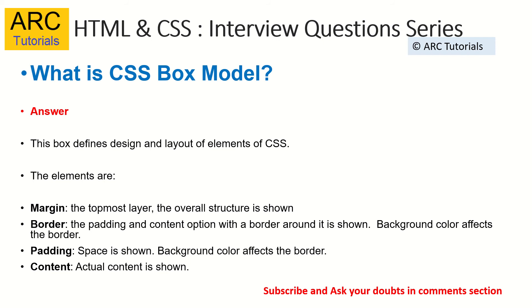The next question that follows is: what are the elements that make up a box model? The important elements are margin, padding, border, and content. These are the four things using which you design a layout that looks like a box. Margin tells the overall structure — how far away an element is. Padding tells how much space, like how big the box should be. Border is obviously for the border, and finally content. Using these four, we define a box model — that's what we call box model design in CSS.